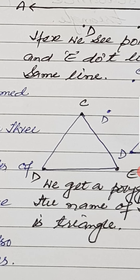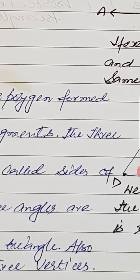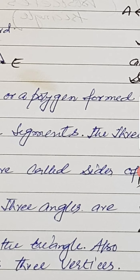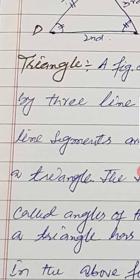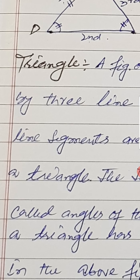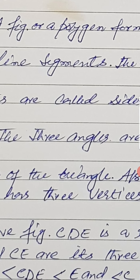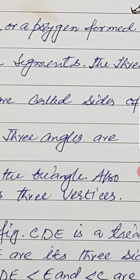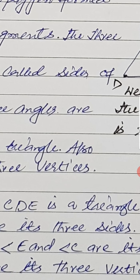And the sum of these three angles — angle C, angle D and angle E — is always 180 degrees. So I have given the complete definition of a triangle. A figure or polygon formed by three line segments; the three line segments are called sides of the triangle; the three angles are called angles of the triangle; and a triangle has three vertices. Vertex means a single corner point; vertices means more than one.